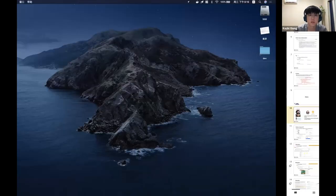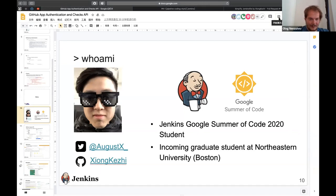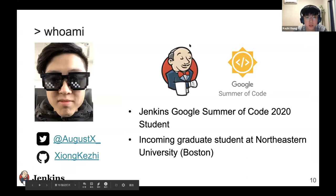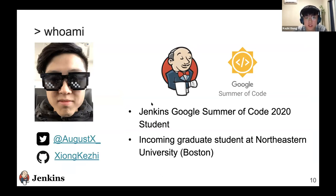GitHub App authentication is basically a foundation feature that enables many additional integrations in Jenkins. Now Kishi will share some user-facing features that become available with GitHub App authentication. Hello everyone, I'm Kishi. I'm going to share my GSoC project: the GitHub Checks API plugin. I'm an incoming graduate student at Northeastern University, currently in a gap year.